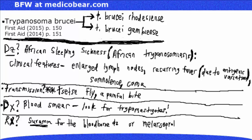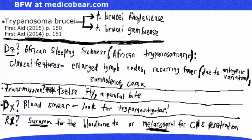This was a brief discussion on high yield points of Trypanosoma brucei. We covered the two subspecies, the disease it causes, how it's transmitted, the diagnosis, and the treatment. It's a short topic, but if you know it, it can translate to easy points on the exam if it comes up.